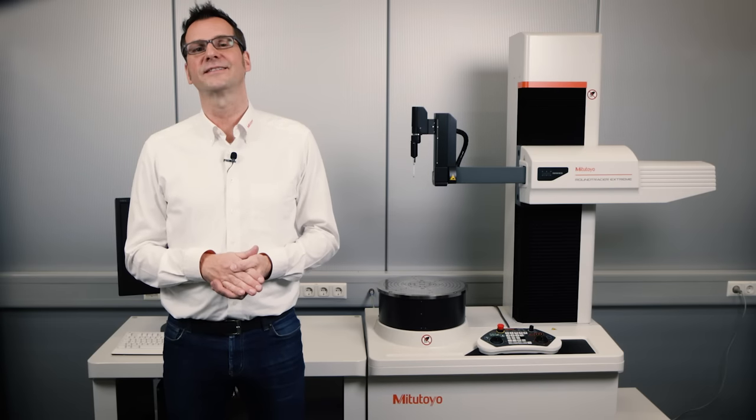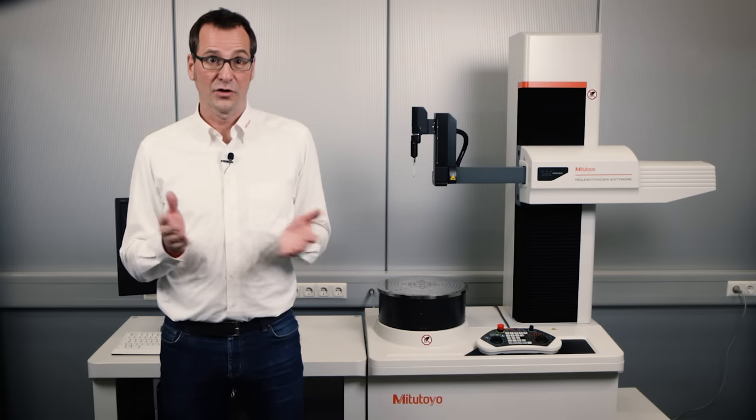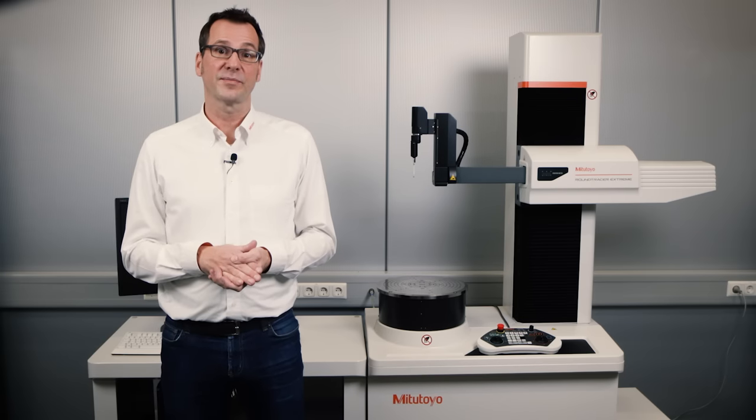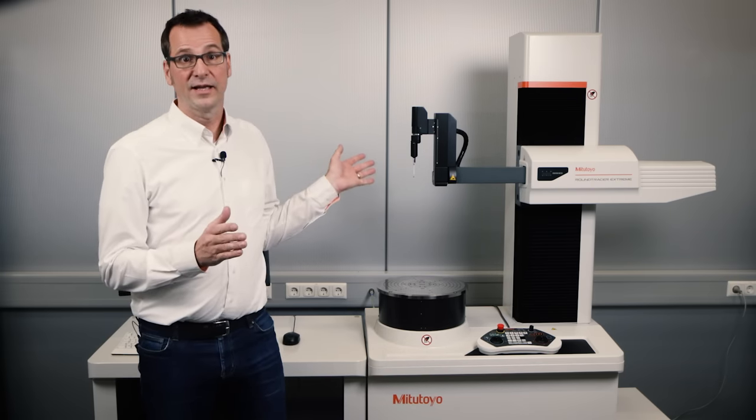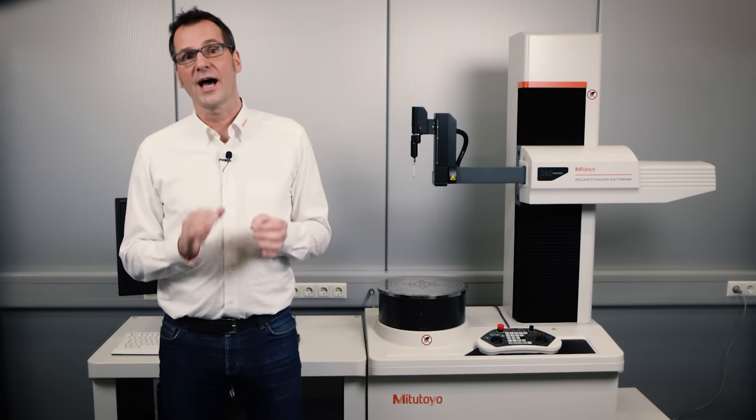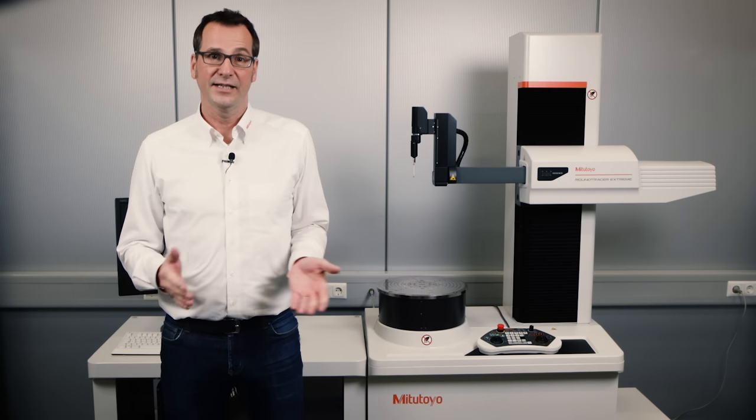So, the new Mitutoyo Round Tracer Xtreme combines several device functionalities such as GD&T, contour, surface roughness measurement and lead twist analyzers in just one device. And all of this with the highest level of accuracy, reproducibility and repeatability of measurement results. It truly is a quality assurance game changer.